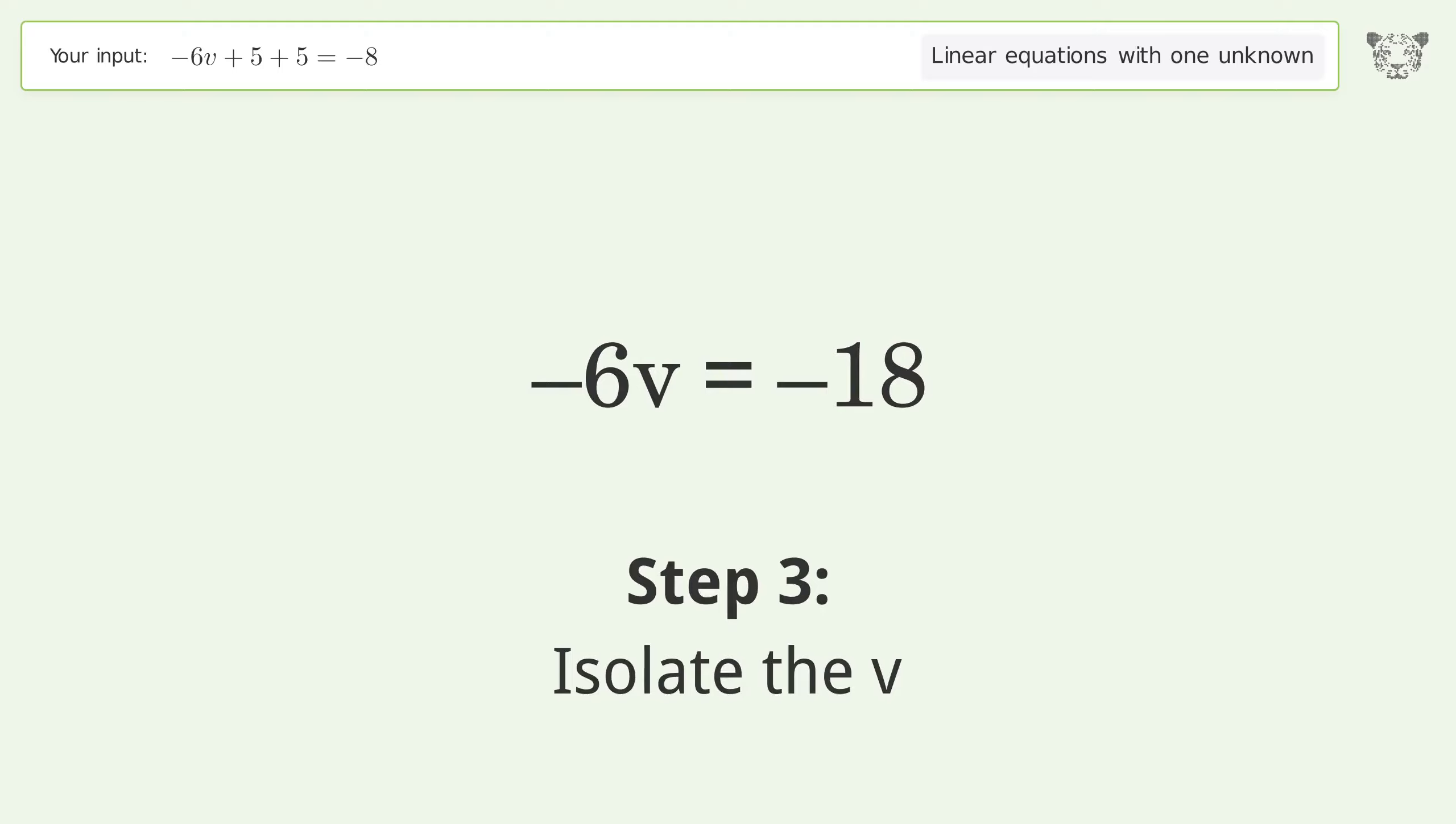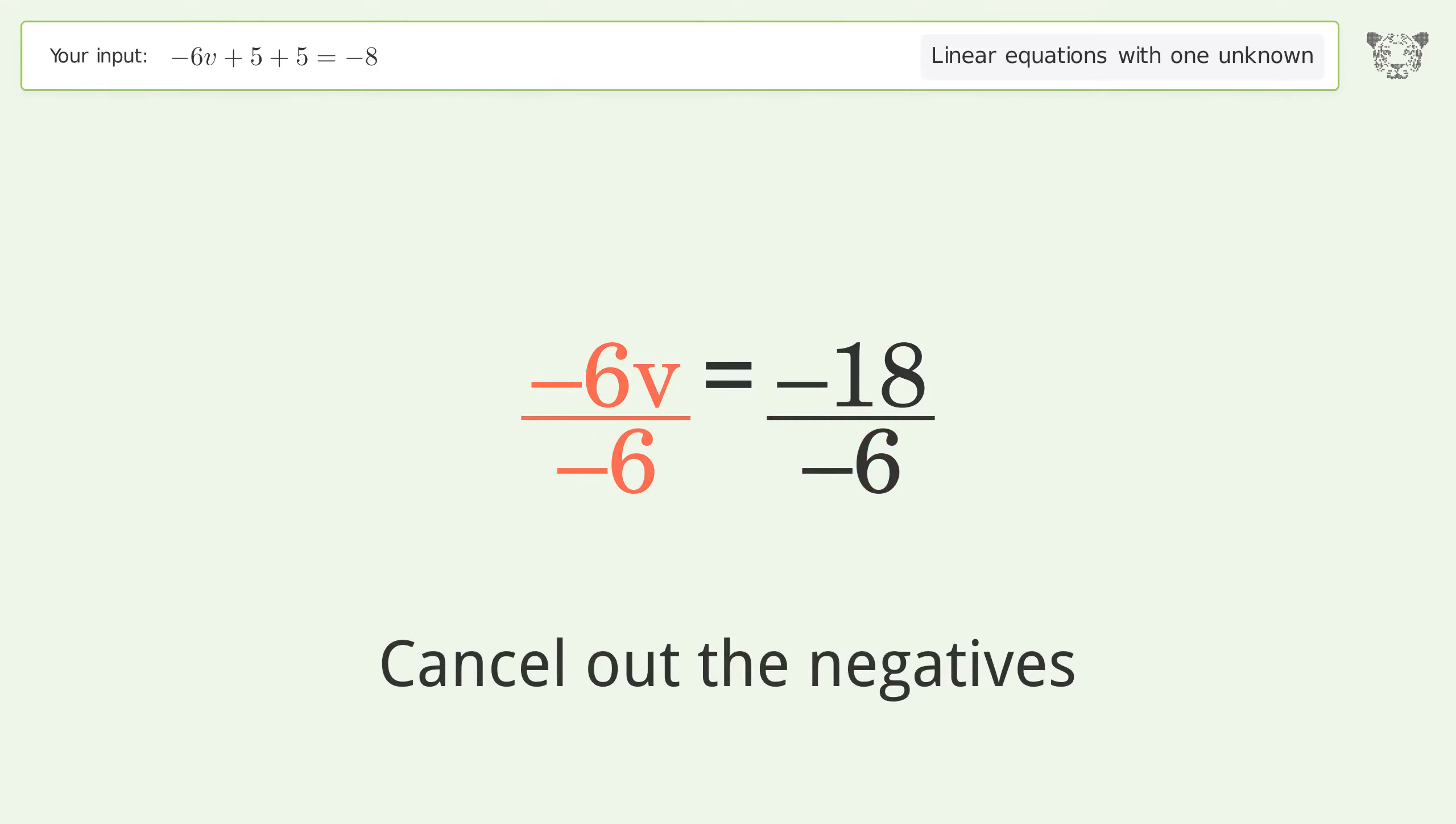Isolate the v. Divide both sides by negative 6. Cancel out the negatives. Simplify the fraction.